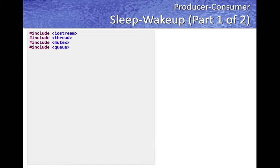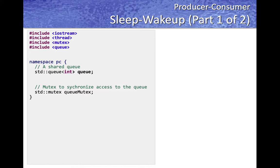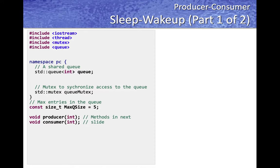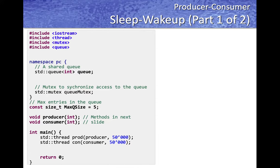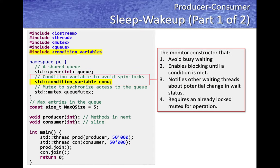The sleep-wakeup producer-consumer code has the same basic structure: standard includes, a namespace with shared queue and mutex, queue size of five, producer-consumer methods, and a main method starting producer-consumer threads generating and consuming 50,000 items. We add the condition_variable header and then declare a condition variable — also called a monitor — which will avoid busy-waiting by enabling threads to block until a condition is met, after which it notifies or wakes up other waiting threads. The condition variable requires an already-locked mutex for its operations.